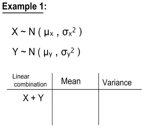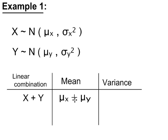If we add these two normal variables, so x plus y, the mean of x plus y is the mean of x plus the mean of y. And the variance of x plus y is the variance of x plus the variance of y.